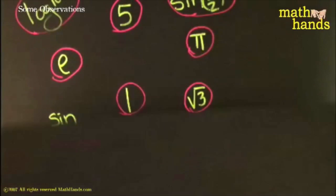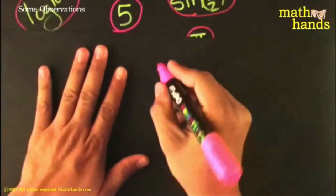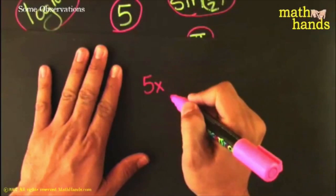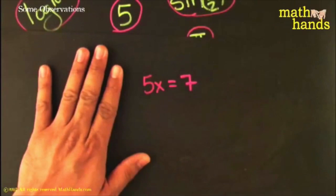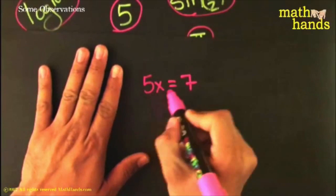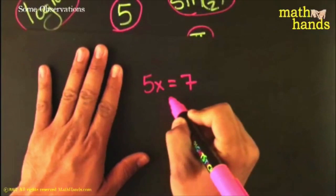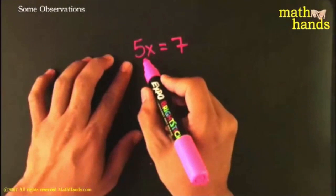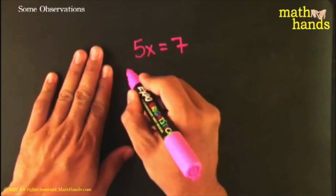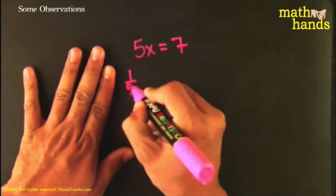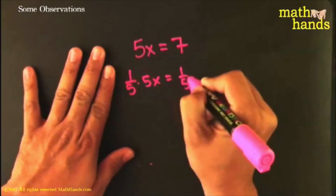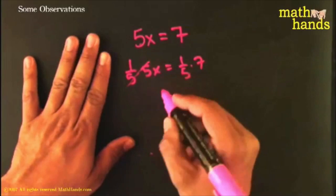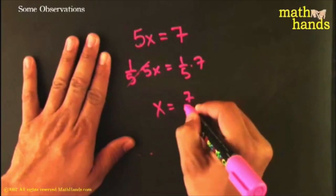Suppose you had 5x = 7. Five is a number, x is a variable, and that equals seven. If you want to solve for x, you do what you do with numbers - you multiply both sides by one-fifth to clear the coefficient. These two cancel out just like numbers do, and you get x equals 7/5.